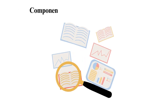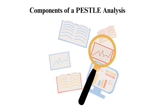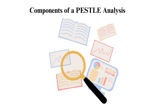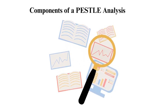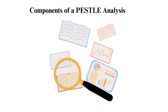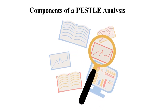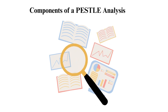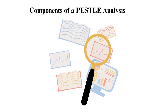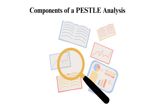Components of a PESTLE analysis. PESTLE analysis covers six elements: political, economic, social, technological, legal, and environmental. If you need to understand how these factors affect other businesses in the same industry, conduct a case study.